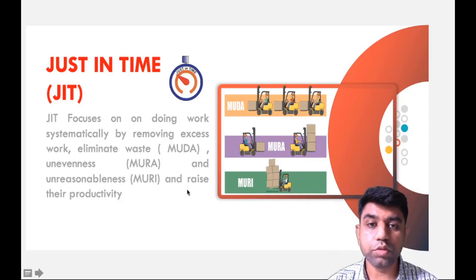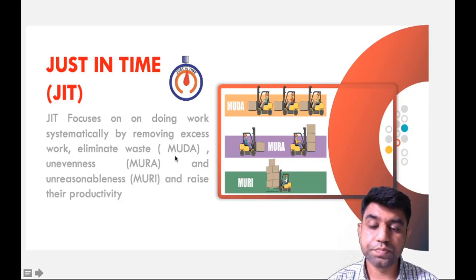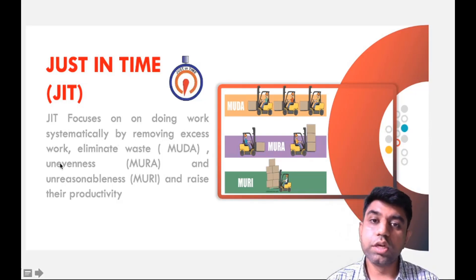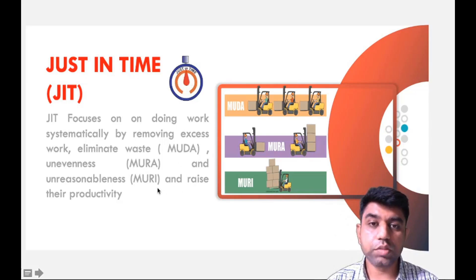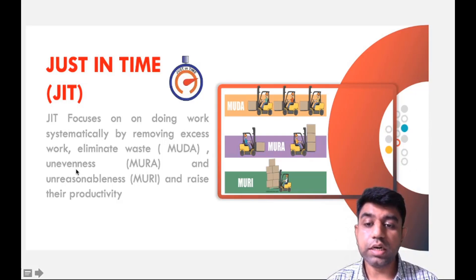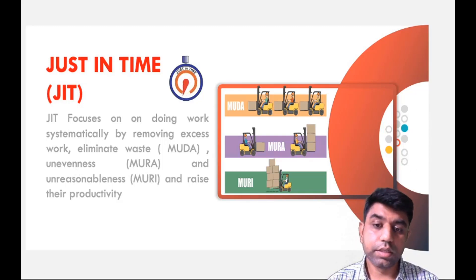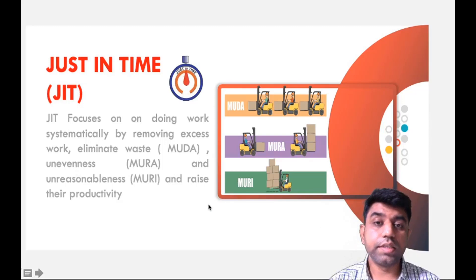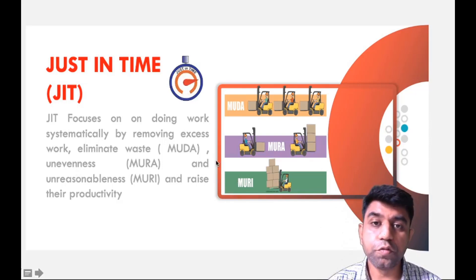The first M is for Muda, which means to eliminate the waste. The second M is for Mura, which means to remove the unevenness. And the third M stands for Mori, which means to remove the unreasonableness. If we implement these, we can raise productivity. We need to focus on Muda, Mura, and Mori.